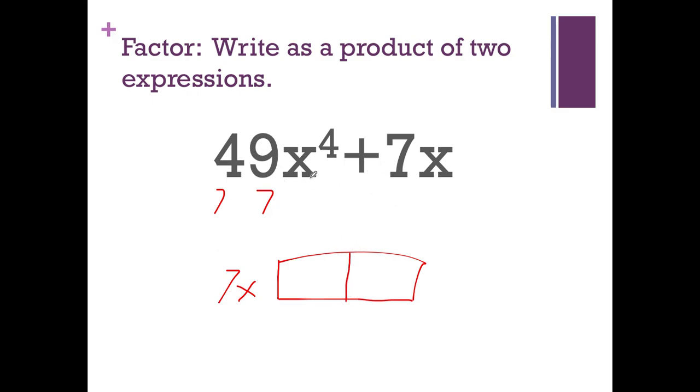And here you go. So then I'm going to write the product in the middle. So we have 49x to the 4th and then 7x. Then let's see, what times 7x is 49x to the 4th? Well, I know that 7 times 7 is 49, and then I know that x times x cubed is x to the 4th. So we're going to write 7x cubed up there.